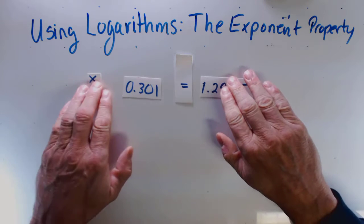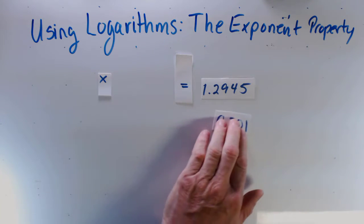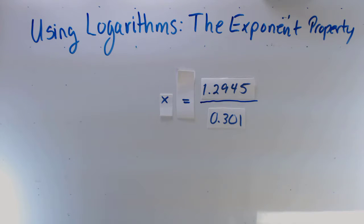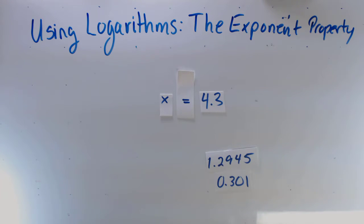All we have to do now is divide both sides by 0.301, which cancels it on the left. Now it's a simple matter of doing the division, and I found that x is equal to 4.3.